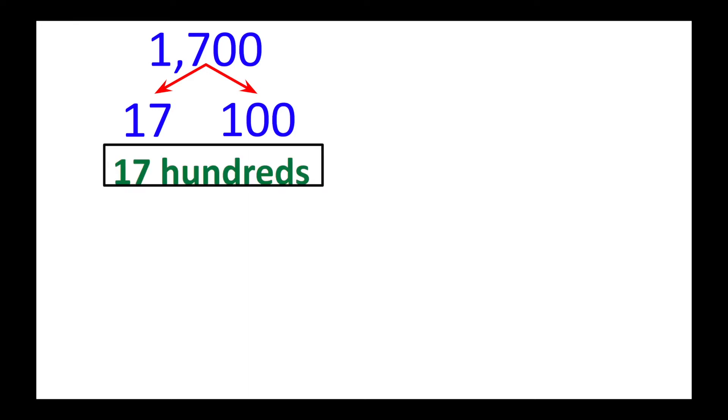Let's take a look at a couple more examples. This number is 1,700 — that's how we would traditionally read it. However, I could also look at this number as 17 hundreds. 17 times 100 is 1,700. If I look at this number as groups of hundreds, I would have 17 hundreds. So 17 hundreds is the same as 1,700.